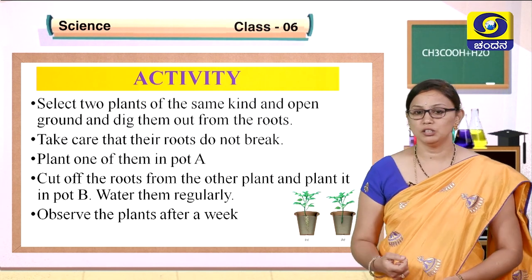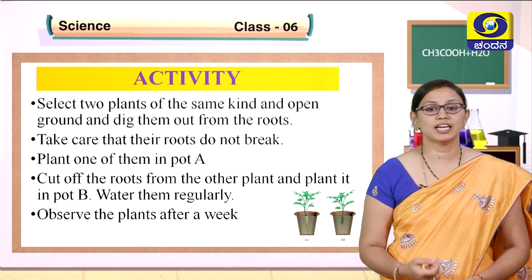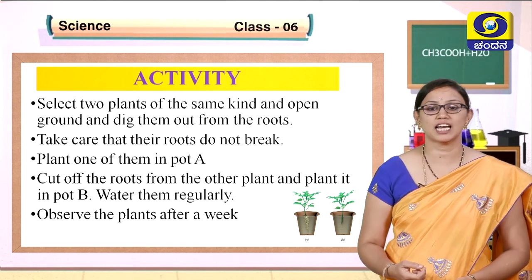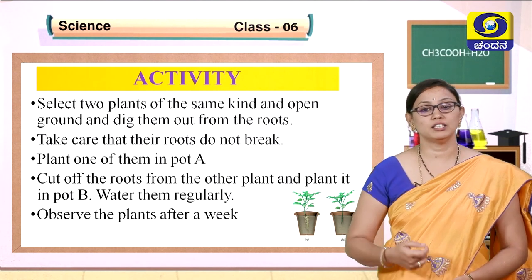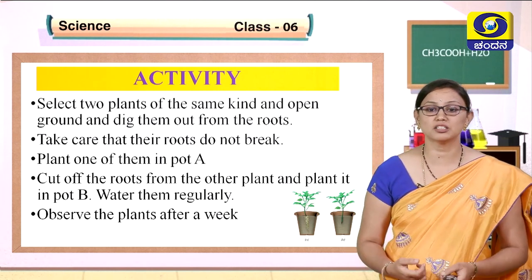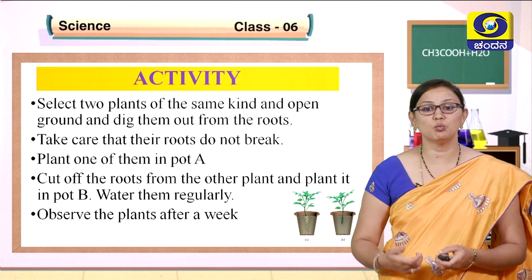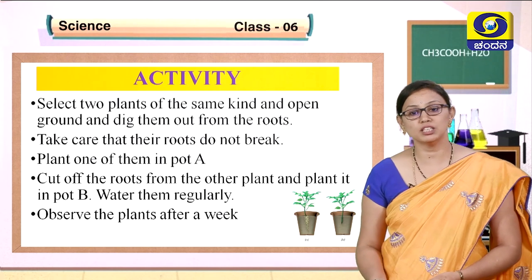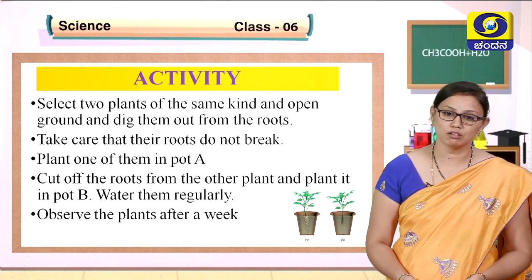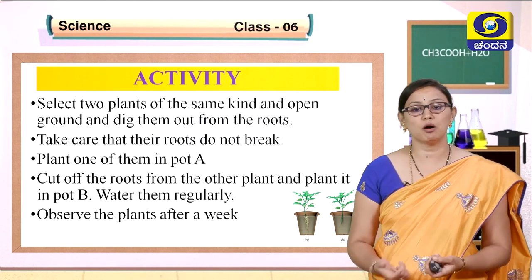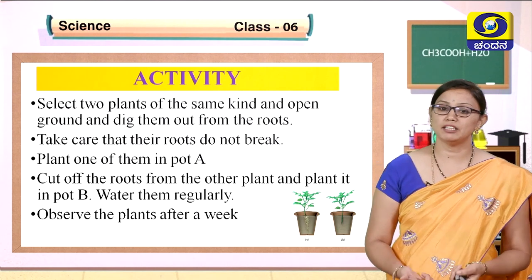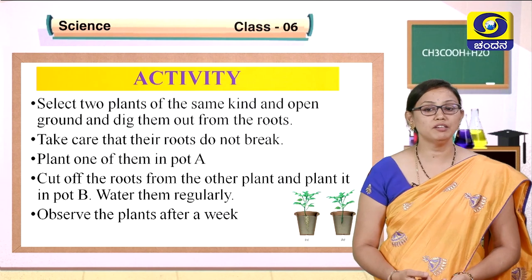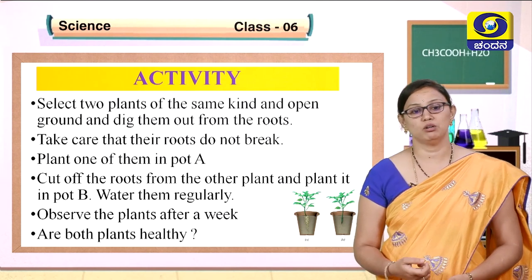Observe the plant after a week. Pot A has roots and pot B does not. Pot A will have the healthy plant. In pot B, since there is no root, water and minerals cannot be absorbed from the soil and cannot be sent to the leaves, so there is no food preparation. Obviously, the plant will die. This shows that roots are a very important part of the plant body.